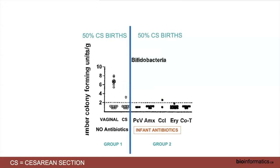So you determine what proportion of infants in group one and group two were delivered by cesarean section. In scenario one: 50% cesarean births in group one and 50% in group two — an even distribution of the confounding factor, which should not produce bias. In scenario two, a likely scenario: only 20% of infants in group one were delivered by cesarean, but 80% in group two — a big imbalance. In your analysis stage, you can do modeling or restriction to account for this confounding bias. You have a solution.